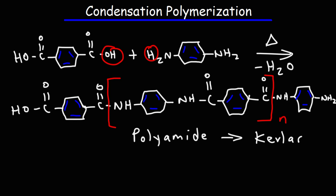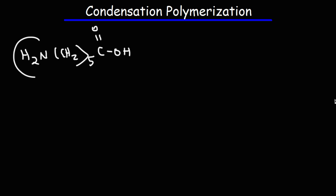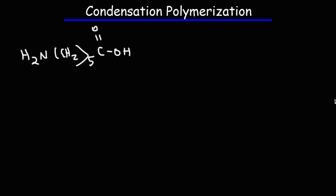The next example is one in which we have the two different functional groups found within the same molecule. For this example I'm going to use 6-aminohexanoic acid. As you can see, we have the amine on the left of the molecule and the carboxylic acid on the right. So this is going to be another polyamide.